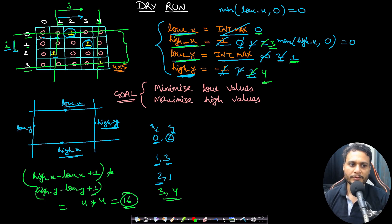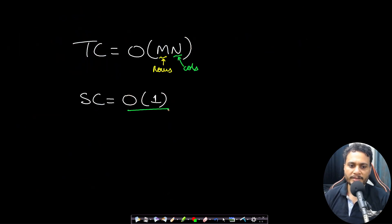We traverse the entire matrix of size M by N exactly one time, and the only extra space used is the four variables. Therefore, the space complexity is O(1) and the time complexity is O(MN).